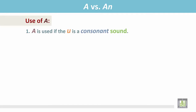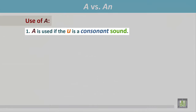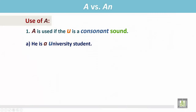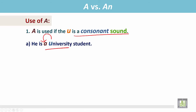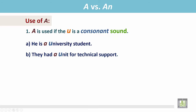Use of A. A is used if the U is a consonant sound — the word begins with U and it has a consonant sound. He is a university student. The word university begins with U; it's a vowel but it has a consonant sound, so we write A before the word university. They had a unit for technical support. The word unit begins with the vowel U but it has a consonant sound, so we write A before the word unit.